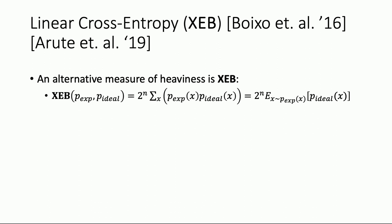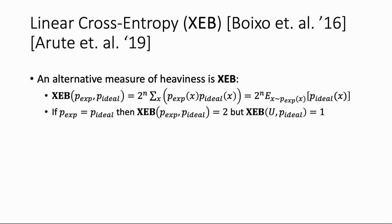So it's two to the N times this dot product between the two probability distributions. You can also think about this as an expectation value of P ideal. Now, if we assume Porter-Thomas statistics — essentially that each output probability is individually distributed as IID exponential — we can calculate that the expected XEB in the ideal case where P exp equals P ideal gives you two.